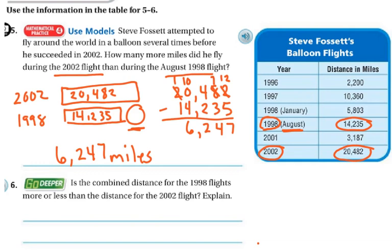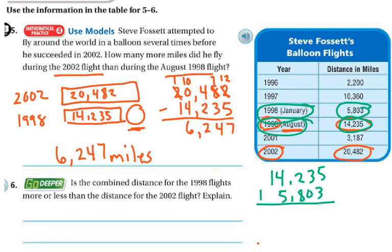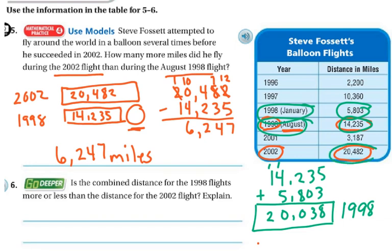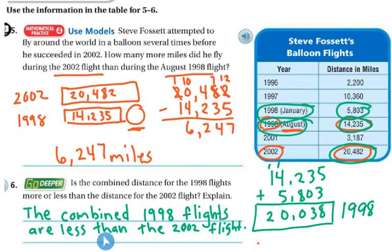Now they're going deeper: is the combined distance for the 1998 flights more or less than the distance for the 2002 flight? First we combine them — January and August 1998. The combined flight is 14,235 plus 5,803: 5 plus 3 is 8, 3 plus 0 is 3, 8 plus 2 is 10 so carry the 1, 4 plus 1 plus 5 is 10 carry the 1, and 1 plus 1 is 2. So the combined 1998 flights total 20,038, and the 2002 flight was 20,482. The combined 1998 flights are less than the 2002 flight by about 450.